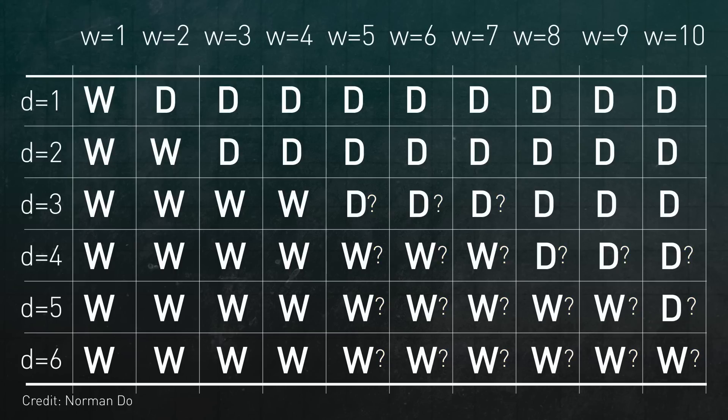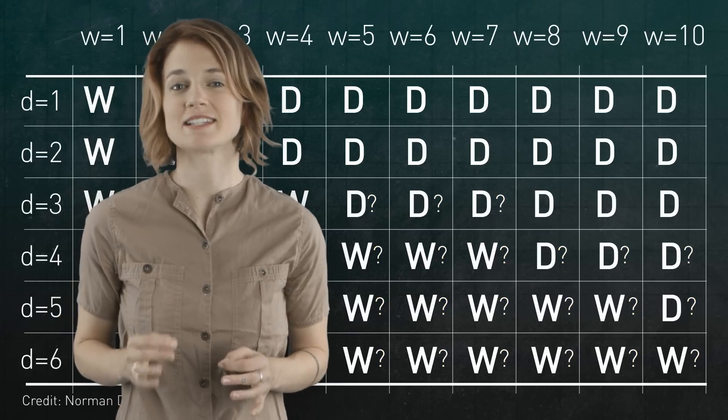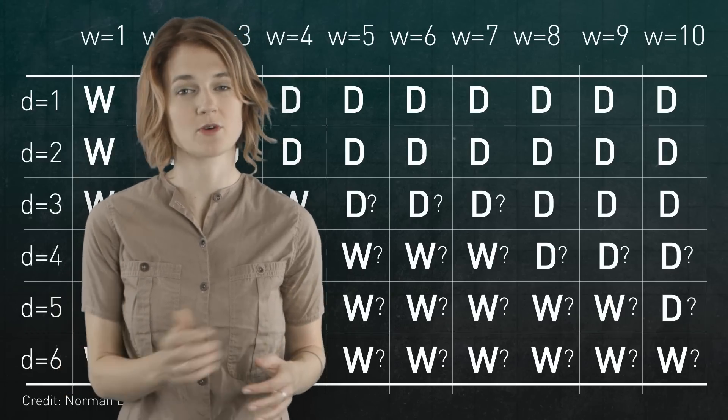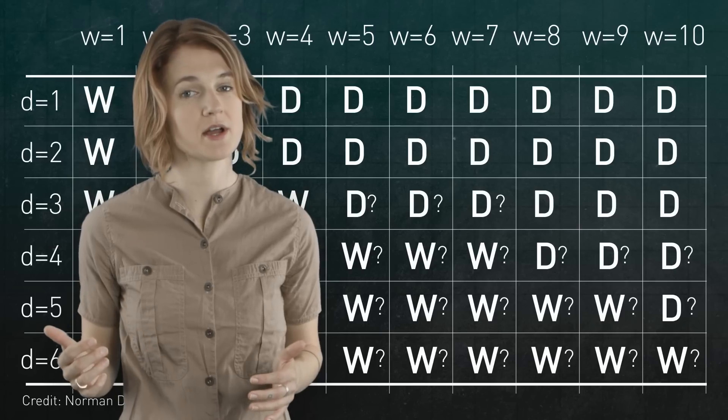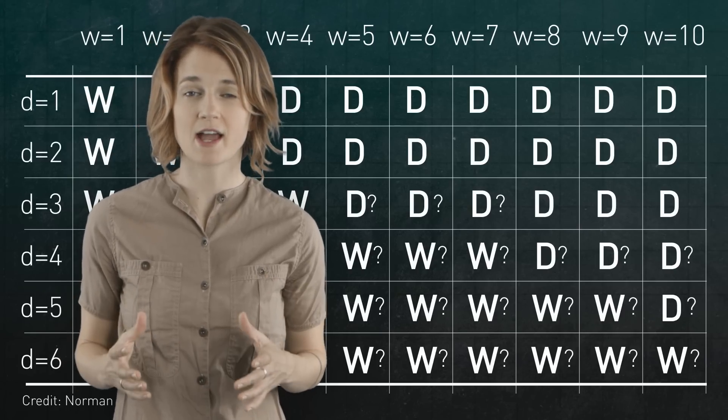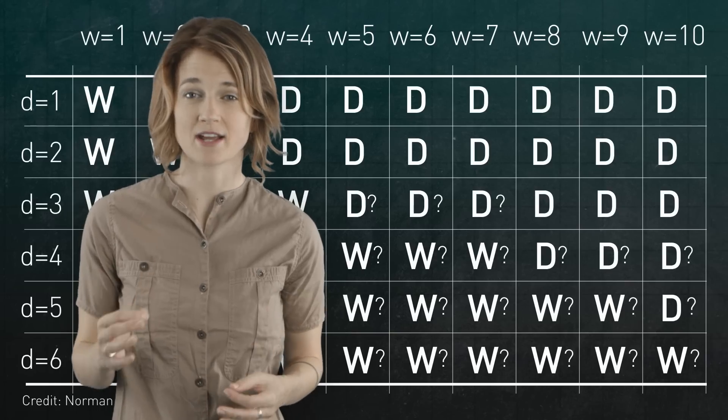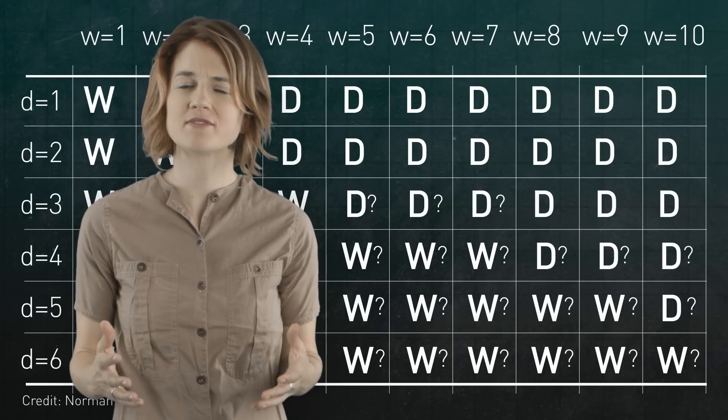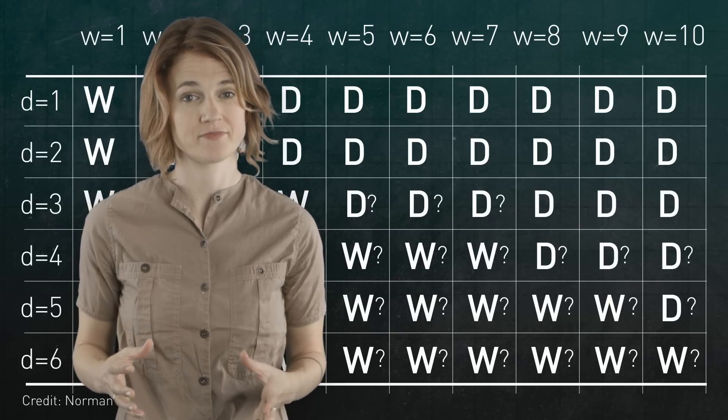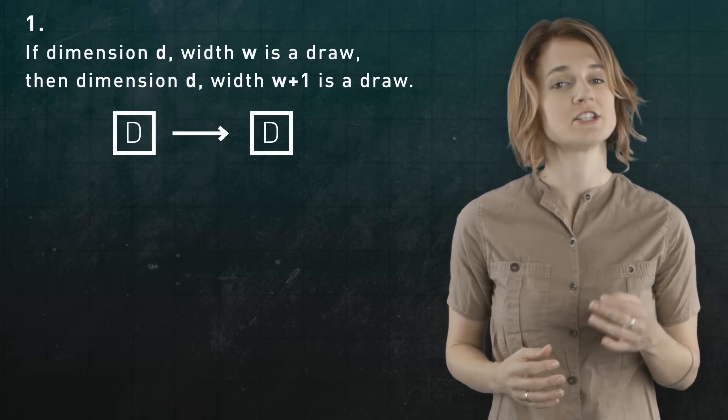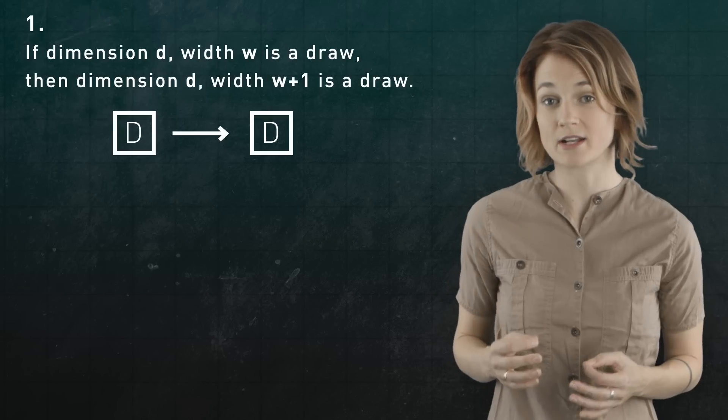What patterns do you notice? The chart highlights a tension in higher dimensional tic-tac-toe. As we increase the width, which corresponds to moving right along a row, it leaves more space in each line for O to block X, but doesn't add very many lines for X to win along. Intuitively, that makes it easier for O to force a draw. In other words, if dimension D with W is a draw, then dimension D with W plus 1 is a draw.